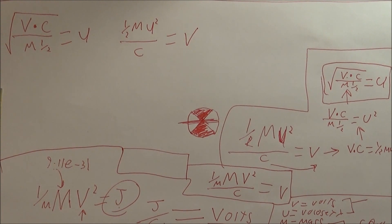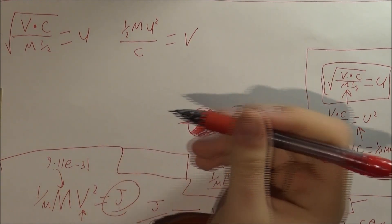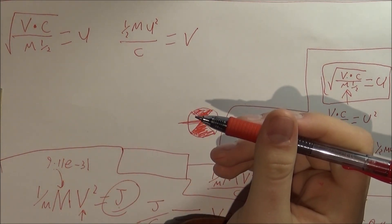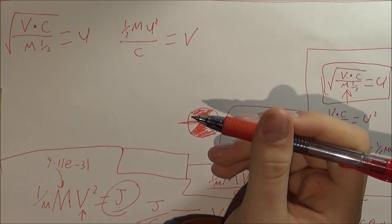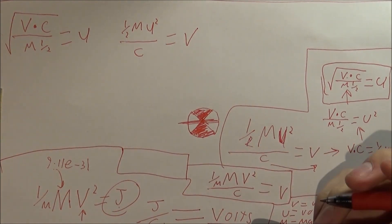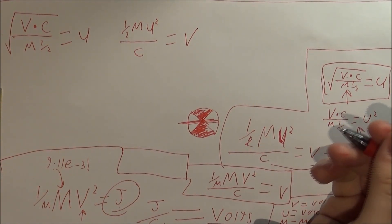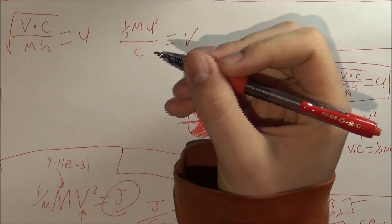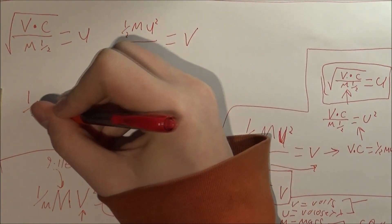All right, let's do one. So let's say we'll start simple. Let's say the electron is moving at 6 million meters a second. So let me, one over two.